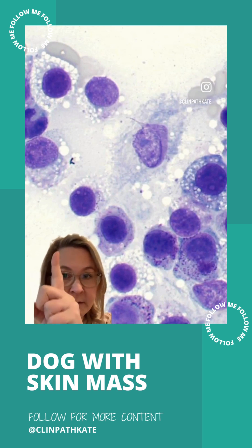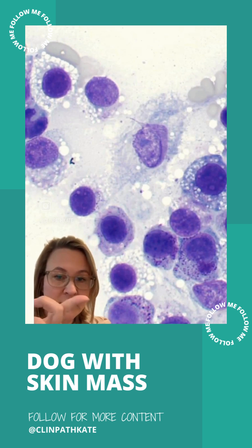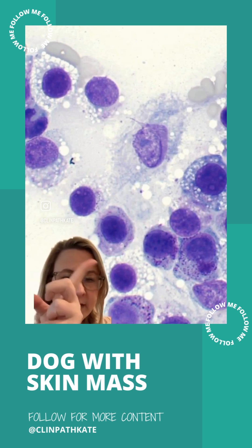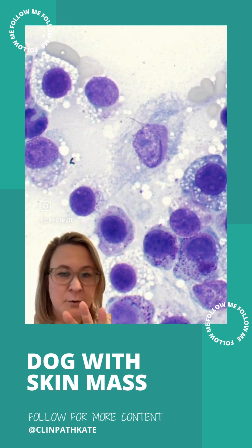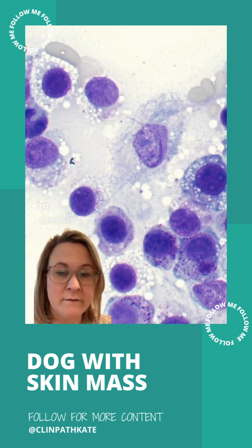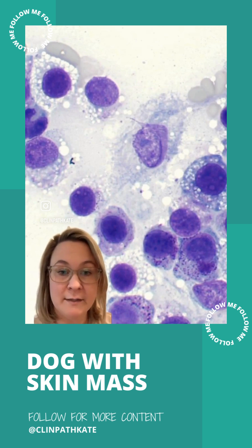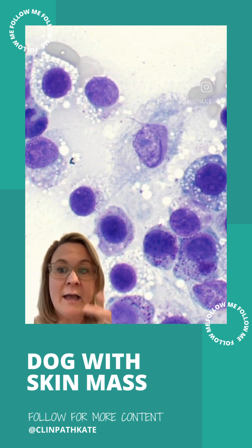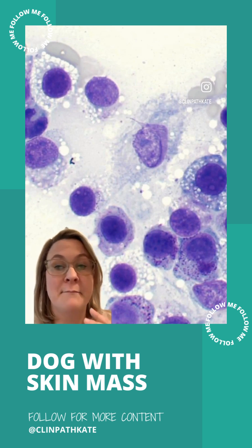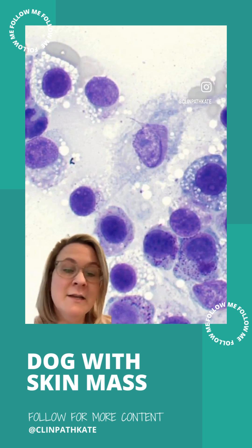Some of them, like the ones up there, have mostly clear vacuoles — and the one right here — but the others here have this sprinkling to sometimes a bit more of the purple granulation. And what round cell tumor type has purple granules? Mast cells.